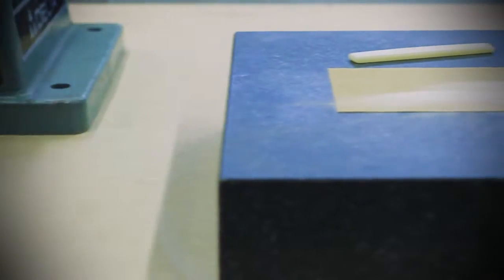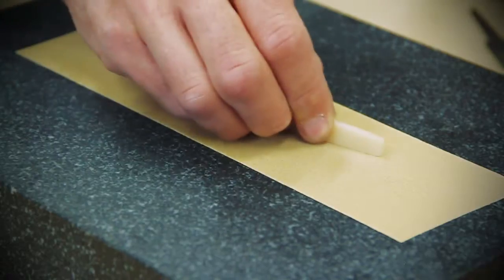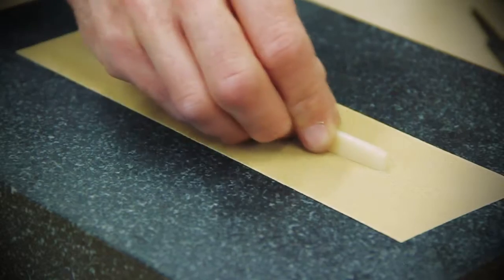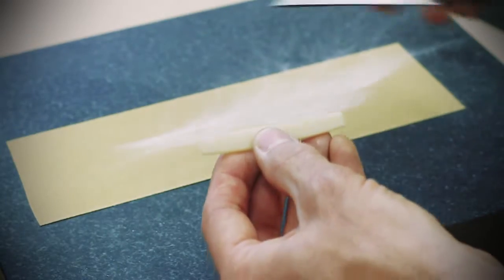Often the saddle is lowered by removing material from the bottom. In many cases this works well, but frequently the bottom of the saddle slot is not perfectly flat, and a saddle may require a little fine tuning to achieve a consistent pressure along its entire length.